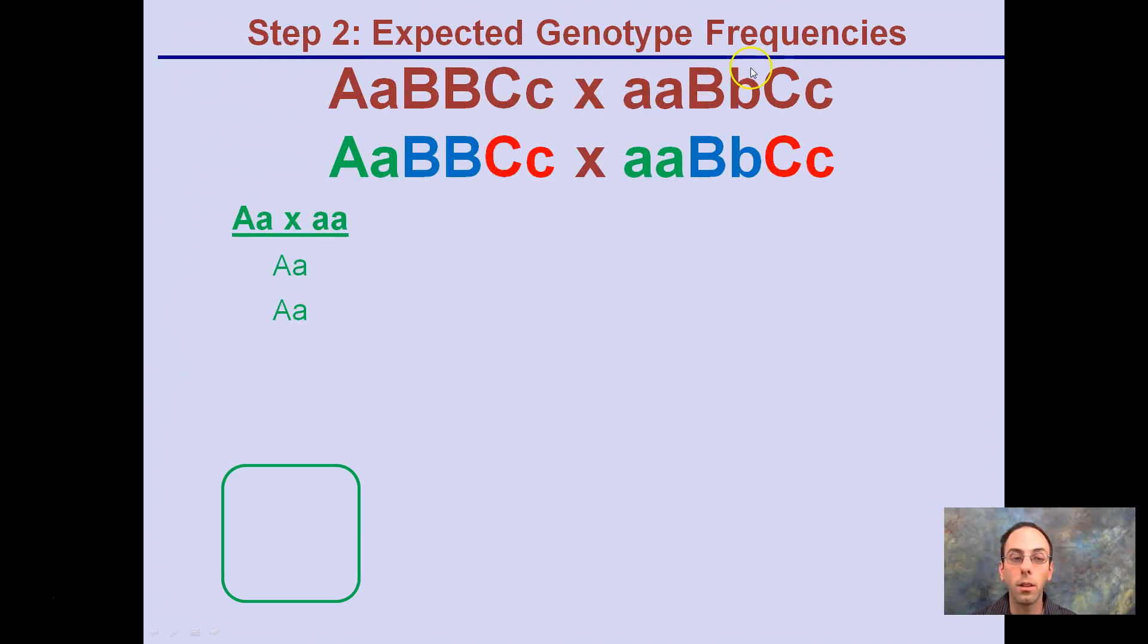So step two, the expected genotype frequencies. Now, I colorized them here, so if you're colorblind, I'm sorry, but for A, it's going to represent green, B's are going to be in blue, and C's will be in red here. So look at just the A's. If we were just to cross those together, we have our heterozygous with our homozygous recessive, and our resulting offspring would be half heterozygous, half homozygous recessive. Not too bad, right?